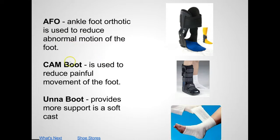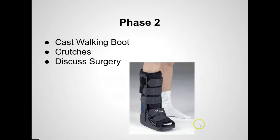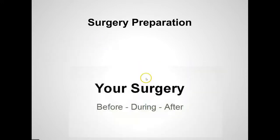An AFO can be very helpful. Initially to reduce pain, we can use a cam boot — a walking boot to reduce pain and make it more comfortable. If you need additional support, most people feel good in a compression stocking or even just a cast sock. This is called an Unaboot, which is like a soft cast that can help people. A walking boot may be needed, especially if it's not getting better, and we also need to talk about surgery as a next step. I hope you found this helpful. If you'd like more information, I put together a foot pain toolkit with all this information and more at DrPelto.com — just put your email in there and I'll send you all that information.